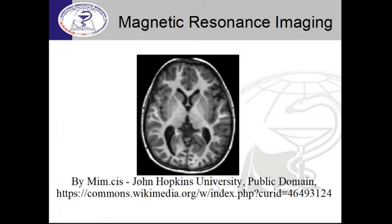An MRI scan of the brain shows really clear and detailed images — we can see all structural features. However, this technology in its basic form primarily provides structural information, not functional. When you make a brain scan, you cannot see how it operates, how information is processed, or how metabolic processes occur. Despite this, MRI structural images are very clear, and you can reconstruct the three-dimensional shape of an object, spin it in virtual reality, and examine it from different angles.